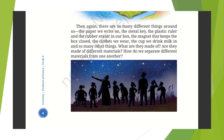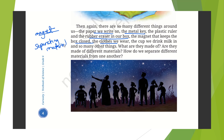There are so many different things around us — paper, a metal key, a plastic ruler, a rubber eraser, and a magnet that keeps the box closed. We are going to learn about magnets and even about the clothes we wear and the cup we drink milk from. What are these things made of? Are they made up of different materials? How do we separate different materials from one another? We are going to learn about separating materials as well, though the chapter name may be different.